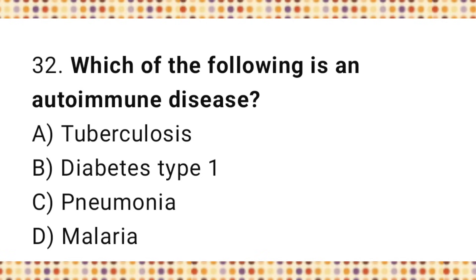Question number 32: Which of the following is an autoimmune disease? The correct answer is B, diabetes type 1.